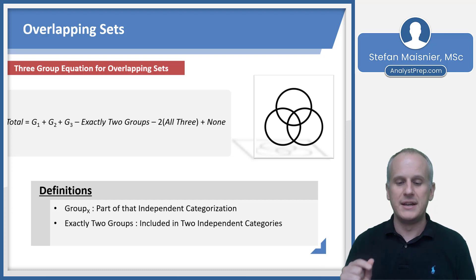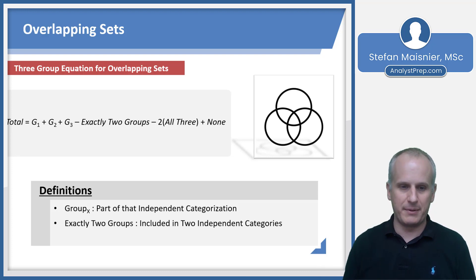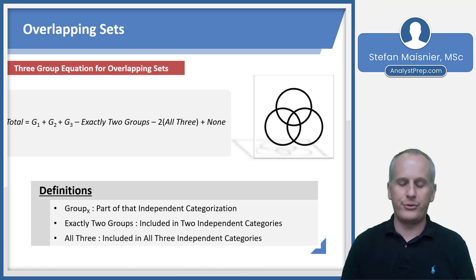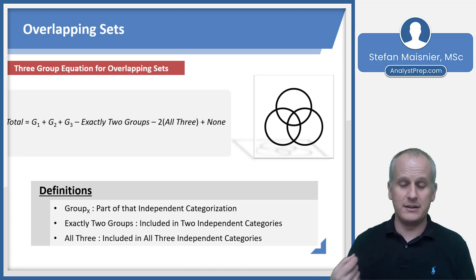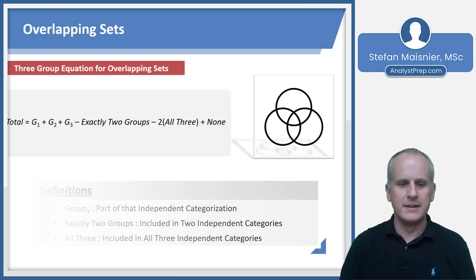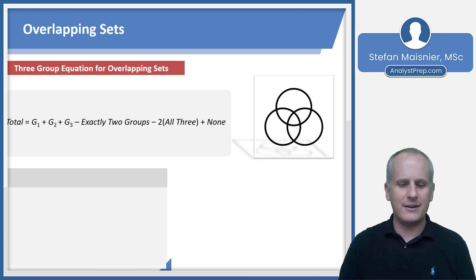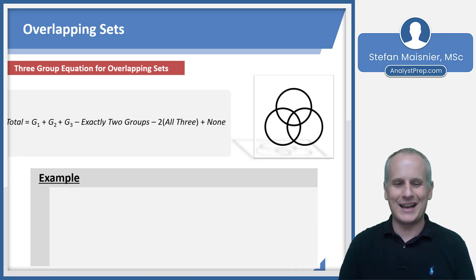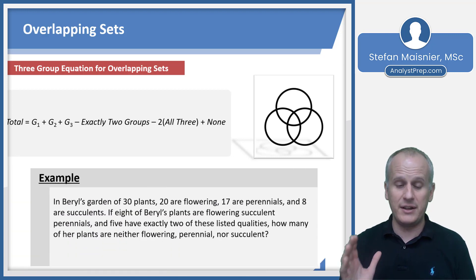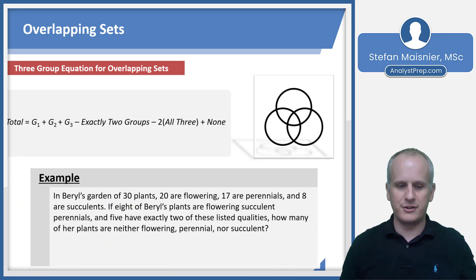Exactly two groups means included in exactly two independent categories, not three. And all three means only those that are in all three independent categories. Now let's take a look at an example of a three-group equation.